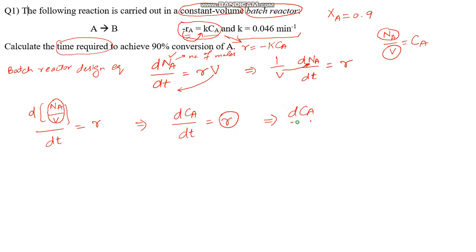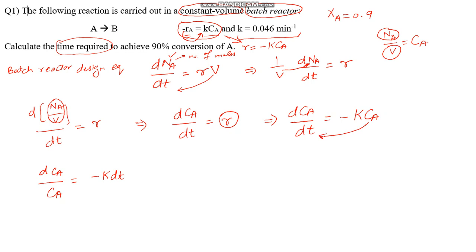Now we separate variables to solve this differential equation. Taking time to one side and concentration to the other side, it becomes dCA/CA = −k dt. CA was multiplying on the left side, so it divides to give dCA/CA. DT was dividing on the left side, so it multiplies on the right side.